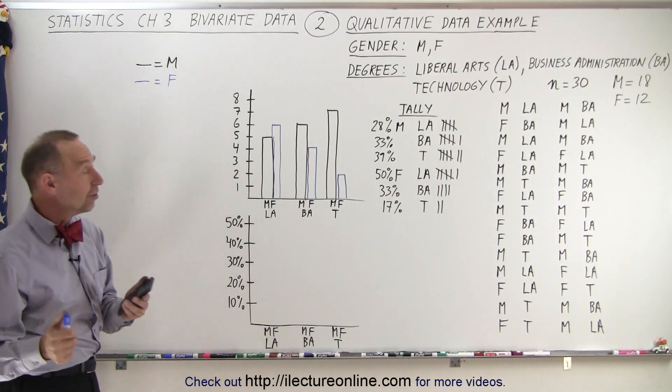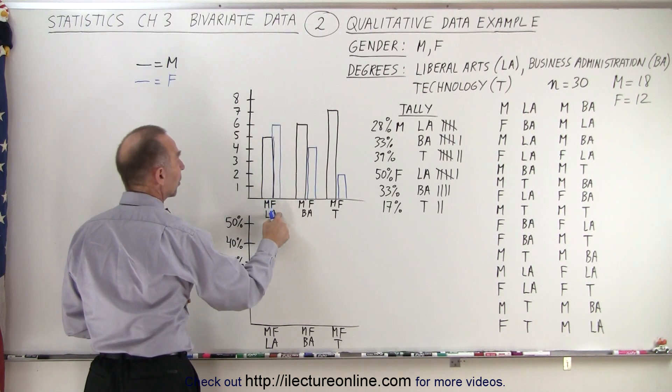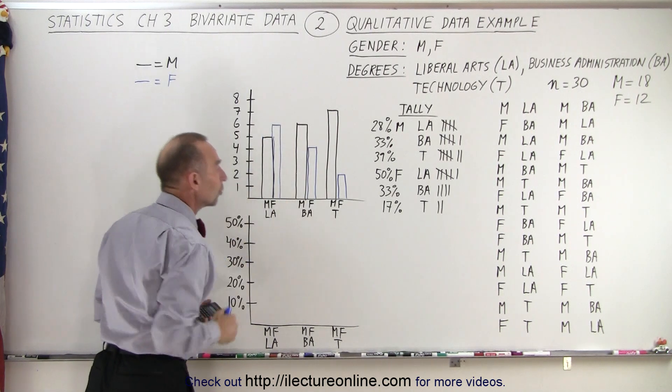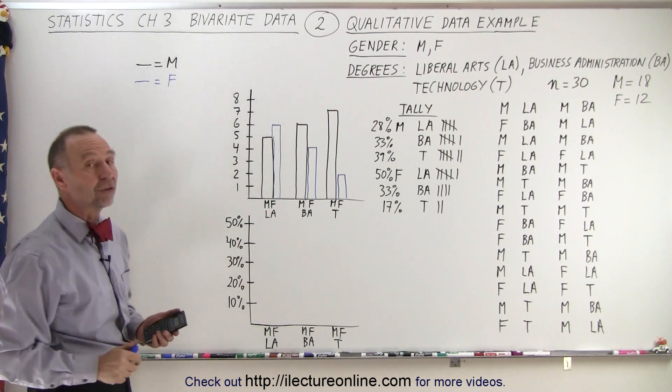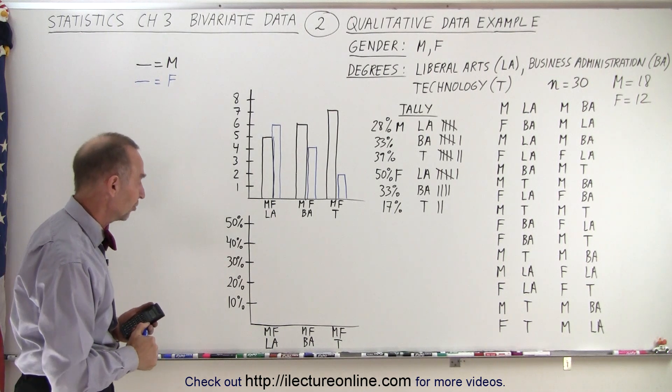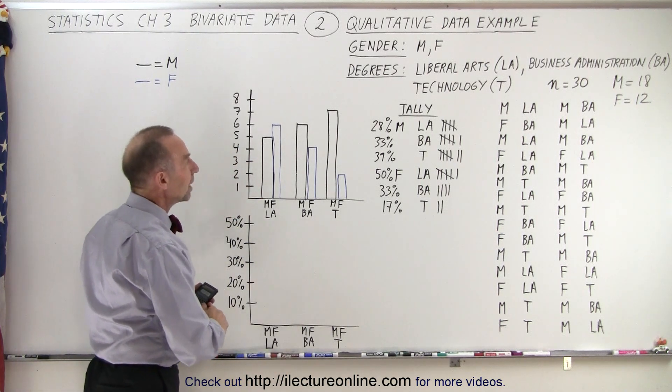Now from this, you would think that there's just a few more female students getting a Liberal Arts degree compared to male students. But then the number's a little bit skewed because we only have 12 female students and 18 male students in our sample. Let's see what it looks like when we take a percentage. So I'll start again with the males.